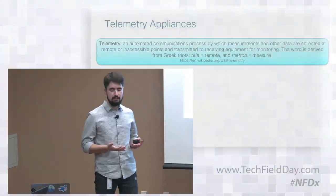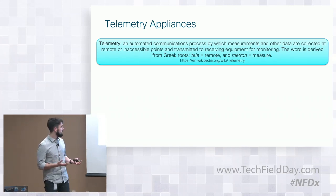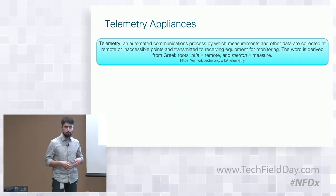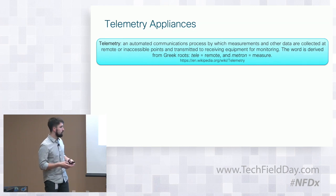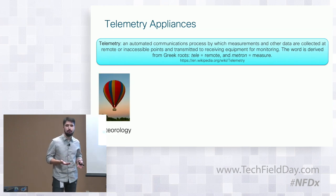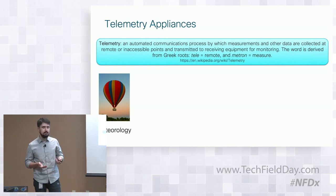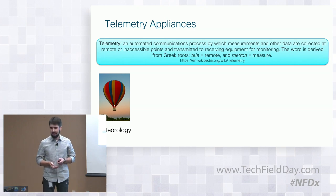Telemetry has a lot of appliances. Telemetry itself is an automated process to receive data from inaccessible points and have it for monitoring or just for storage. From a historical point of view, telemetry is used in meteorology for 100 years — it gathers all the data about humidity, wind speed, and temperatures.